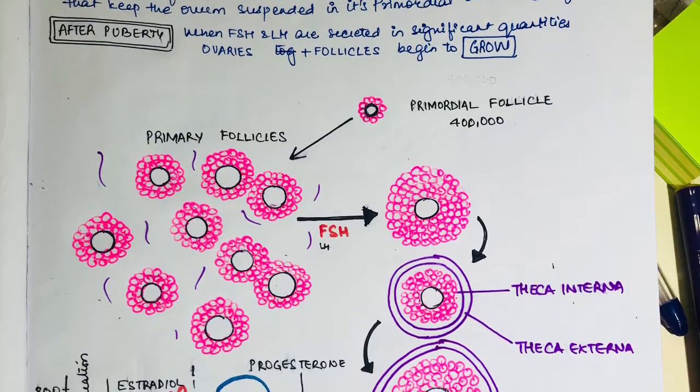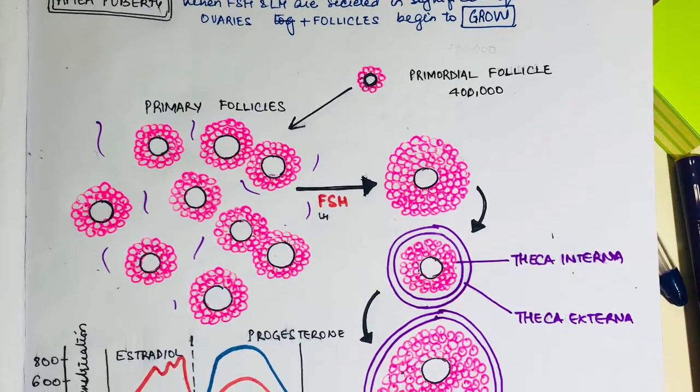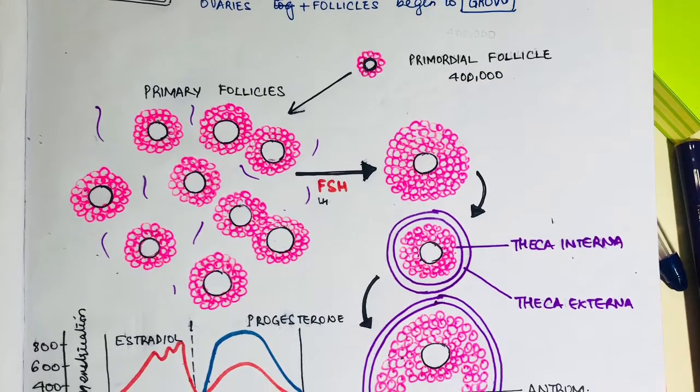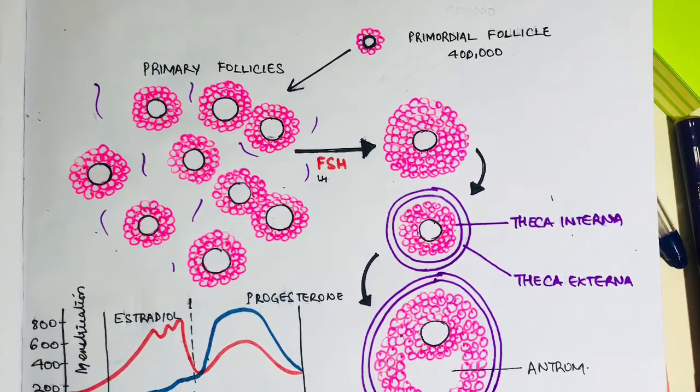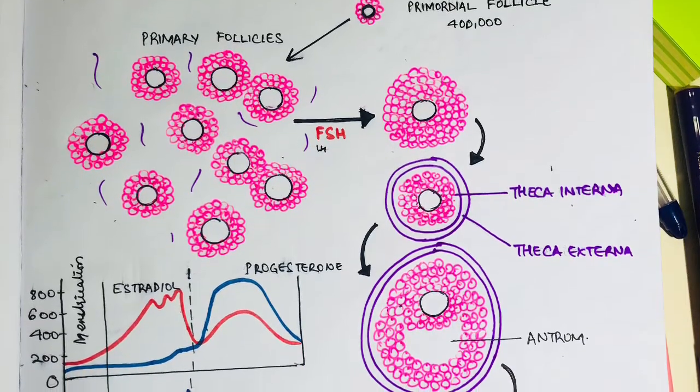Out of the six follicles that I was talking about in the beginning, only one follicle fully matures each month and the remainder undergoes atresia. This single follicle reaches a diameter of one to one point five centimeters at the time of ovulation.